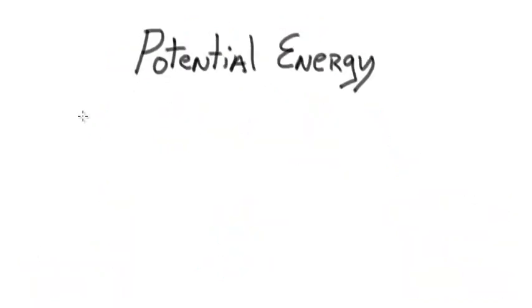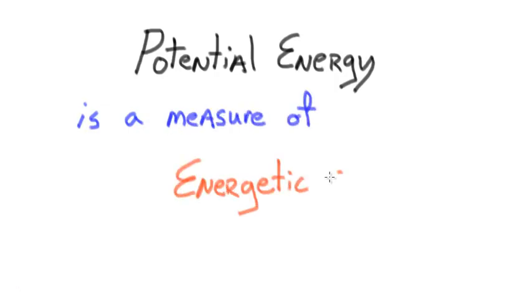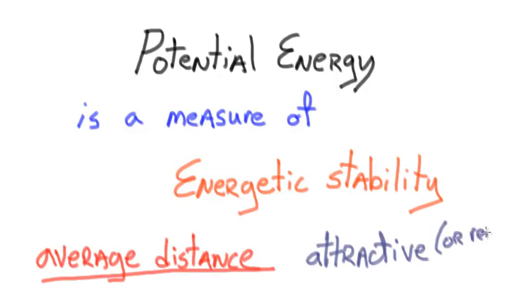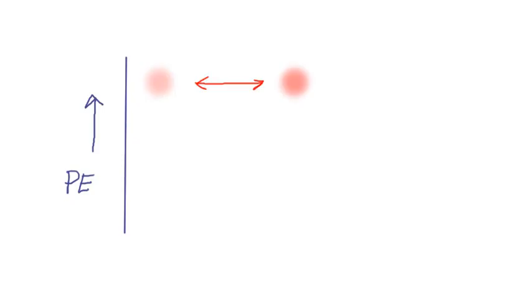Let's start with energetics. In general, the energetic stability of a system is really a measure of the potential energy of the system. If we think about the system being comprised of a large number of particles, the potential energy is a measure of the average distance between the particles, as well as the strength of attractive or repulsive forces between those particles. If I plot on a y-axis potential energy increasing as I move up as a function of the distance between particles, I can see that as particles get closer together, the potential energy goes down or becomes lower.